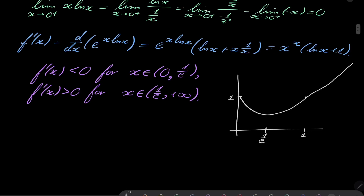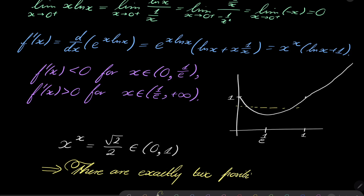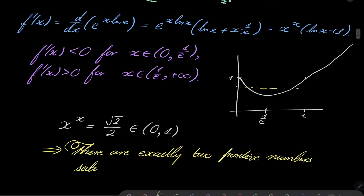Now let's tackle our equation. We have x to the power of x equals square root of 2 over 2. Notice that square root of 2 over 2 is a number between 0 and 1. So from our graph we can see that our equation has exactly two solutions, because the horizontal line at that value intersects the graph in two places.